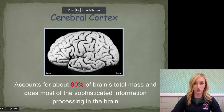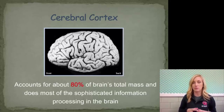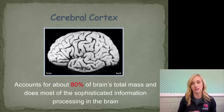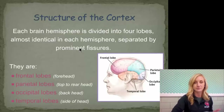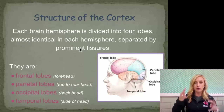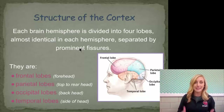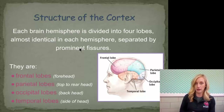The cerebral cortex is all the guts-looking stuff on the very top of our brain. It accounts for 80% of the brain's total mass and does most of the sophisticated information processing in the brain. It's super important and what makes us human. Each brain hemisphere is divided into four lobes, almost identical in each hemisphere, separated by prominent fissures.